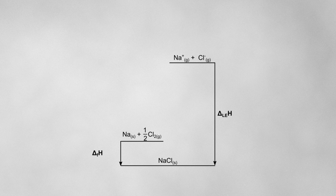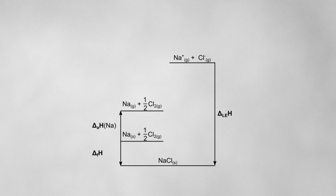The first thing we'll need to do is convert our elements into gaseous atoms. We can start by converting the solid sodium into gaseous sodium atoms — this is the process described by the enthalpy of atomization for sodium. We can also convert the chlorine molecules into individual chlorine atoms, which is the process described by the enthalpy of atomization for chlorine.